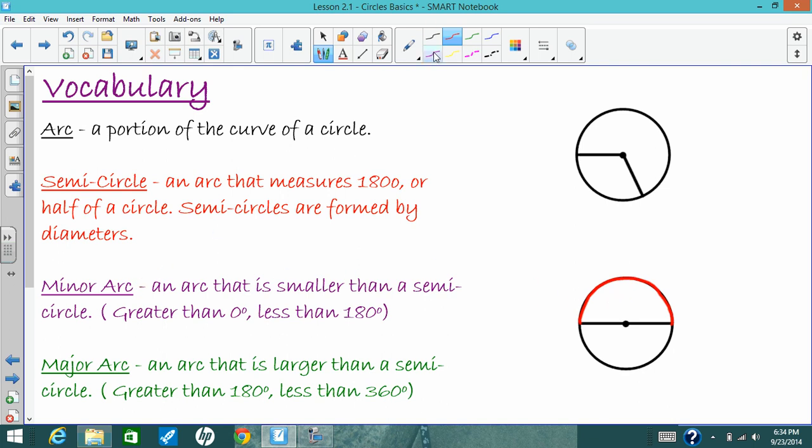A minor arc is an arc that's bigger than zero, but it's smaller than 180, so it's smaller than a semicircle. So this piece of this circle right here, that's a minor arc. It's bigger than nothing, and it's smaller than half the circle.